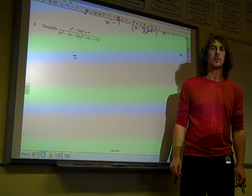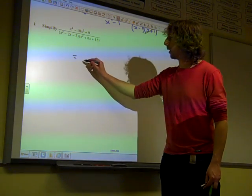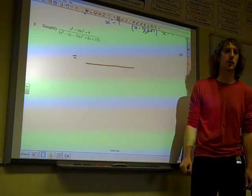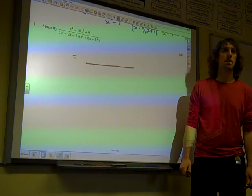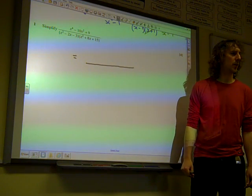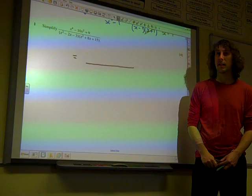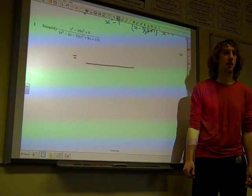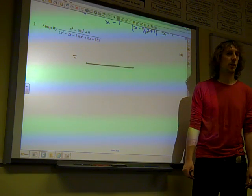Still quadratic on the top. So what can we do with the top line? Does it factorise? If it said t squared minus 10t plus 9, what would it factorise to?